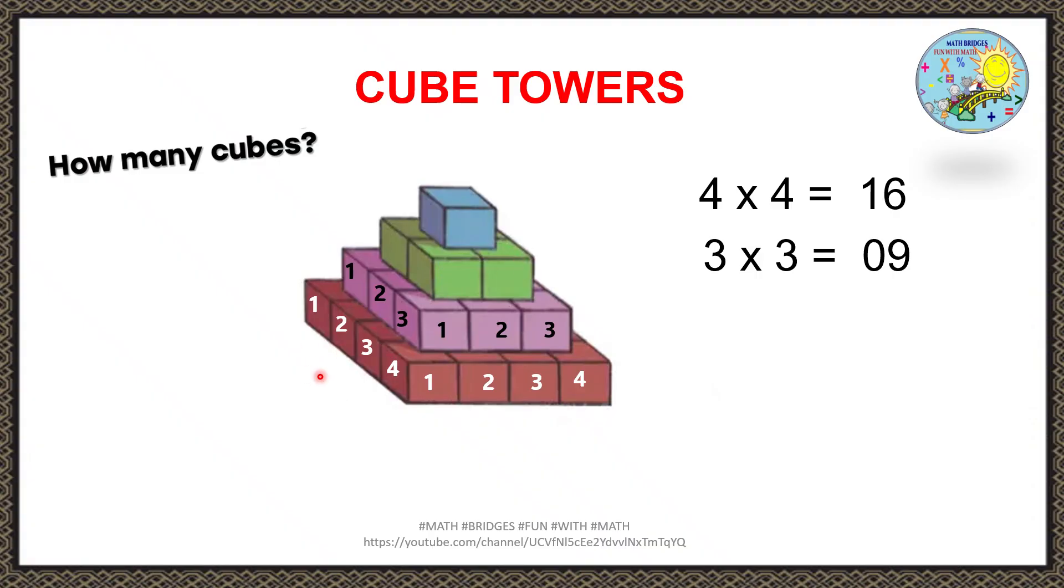Now the third layer green color. 1, 2 and from this side 1, 2. 2 by 2, 2 times 2 which equals 4.